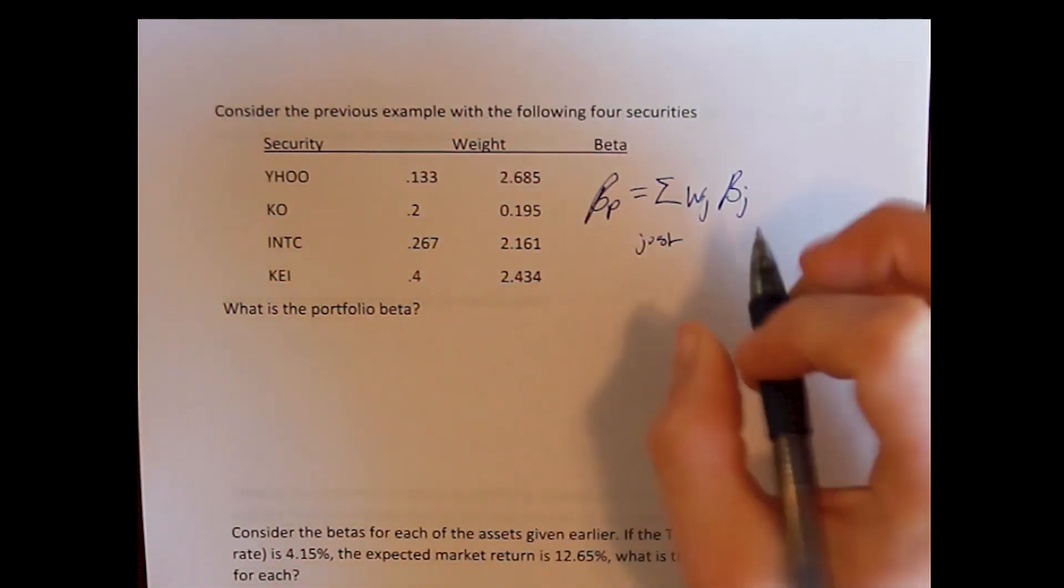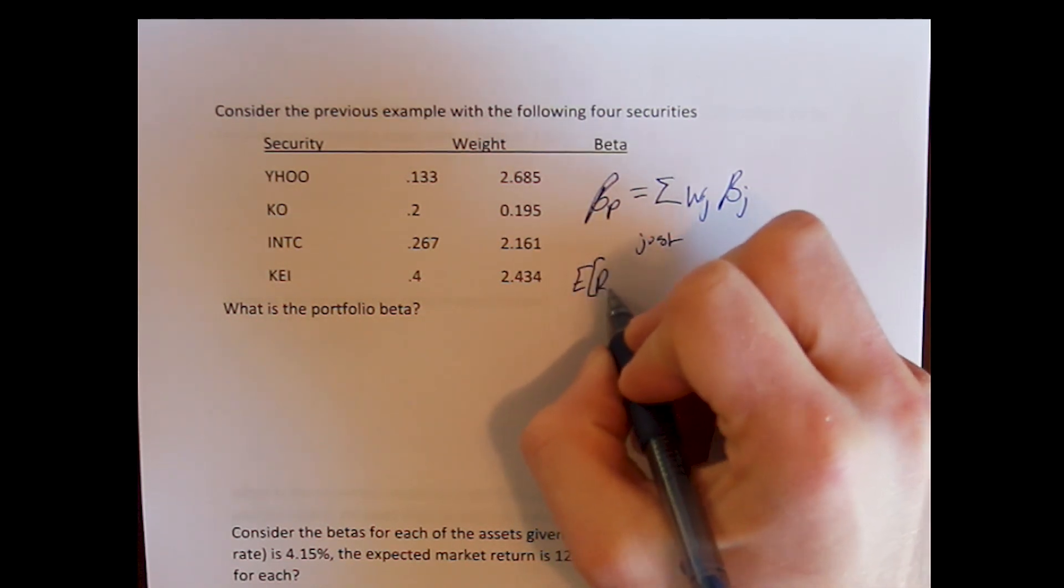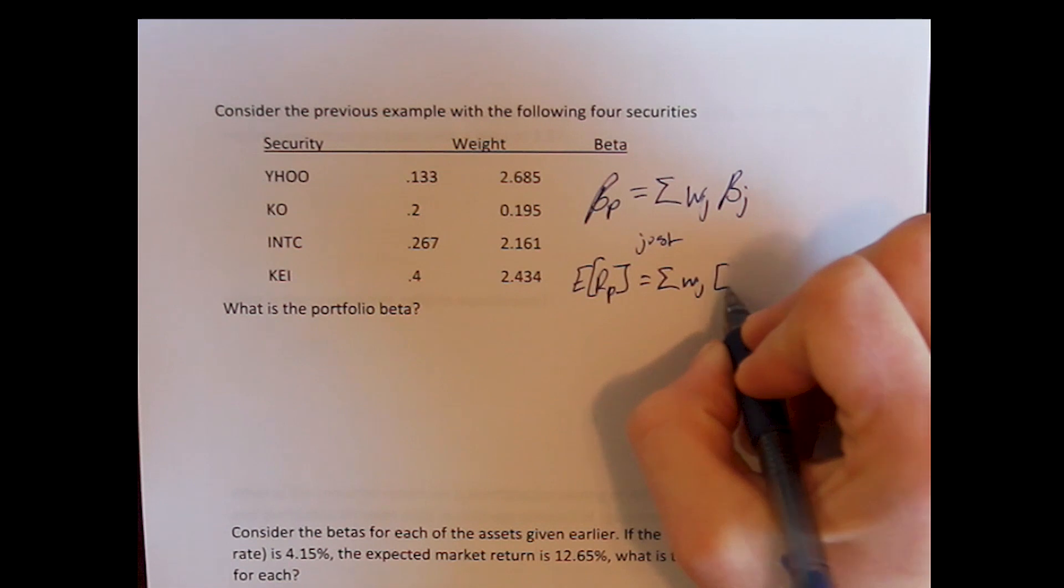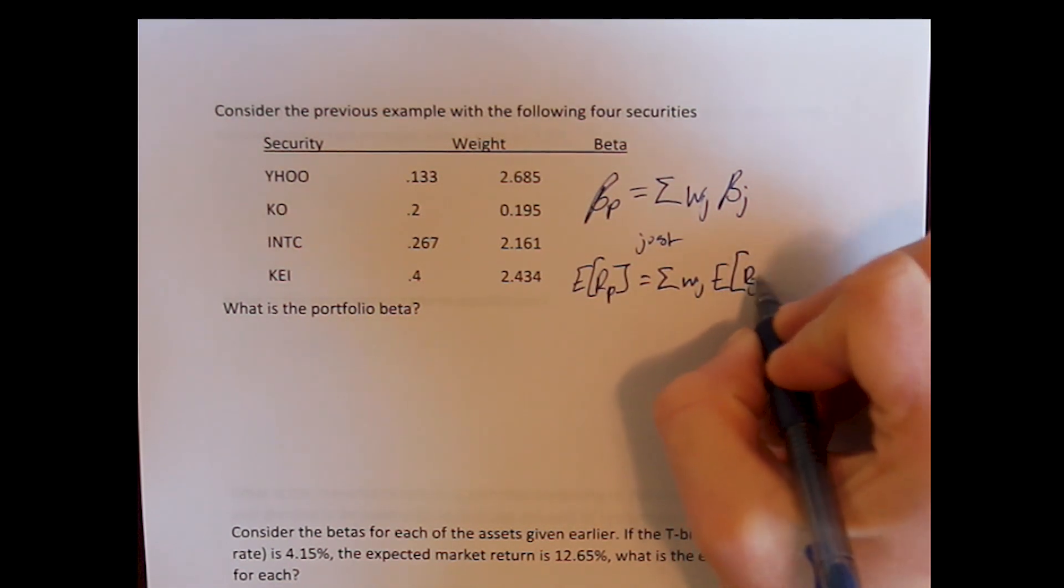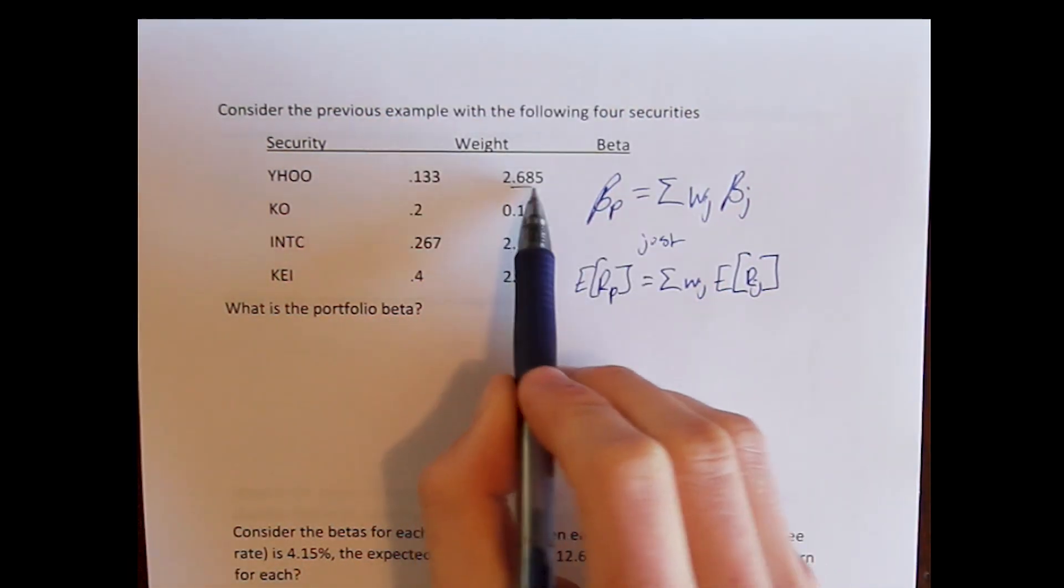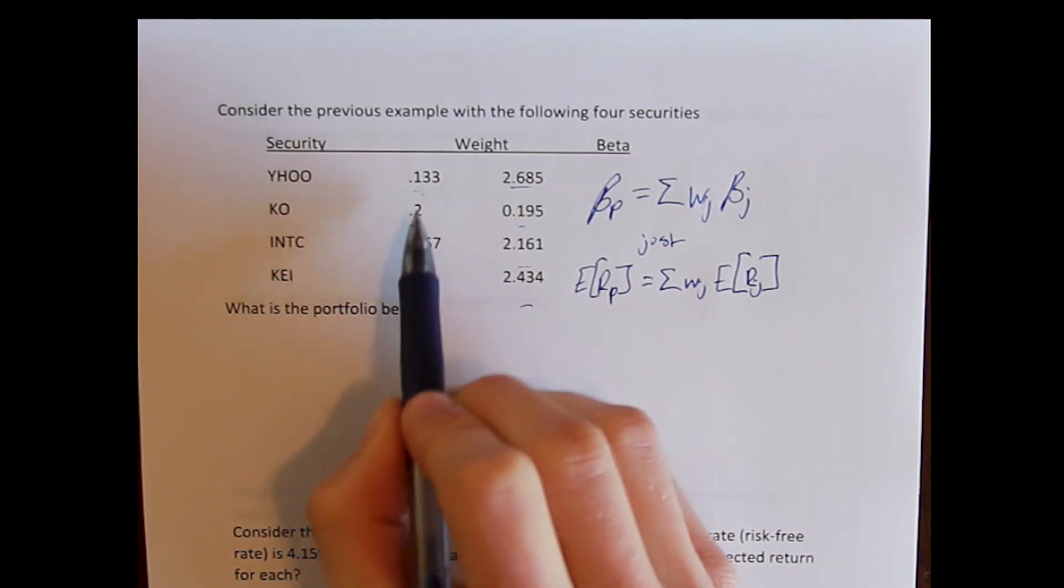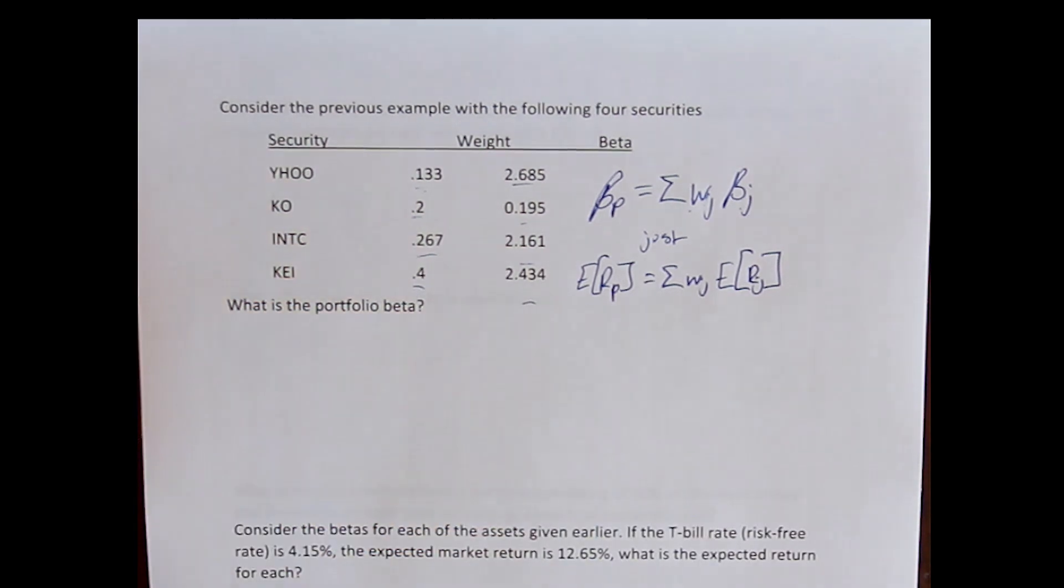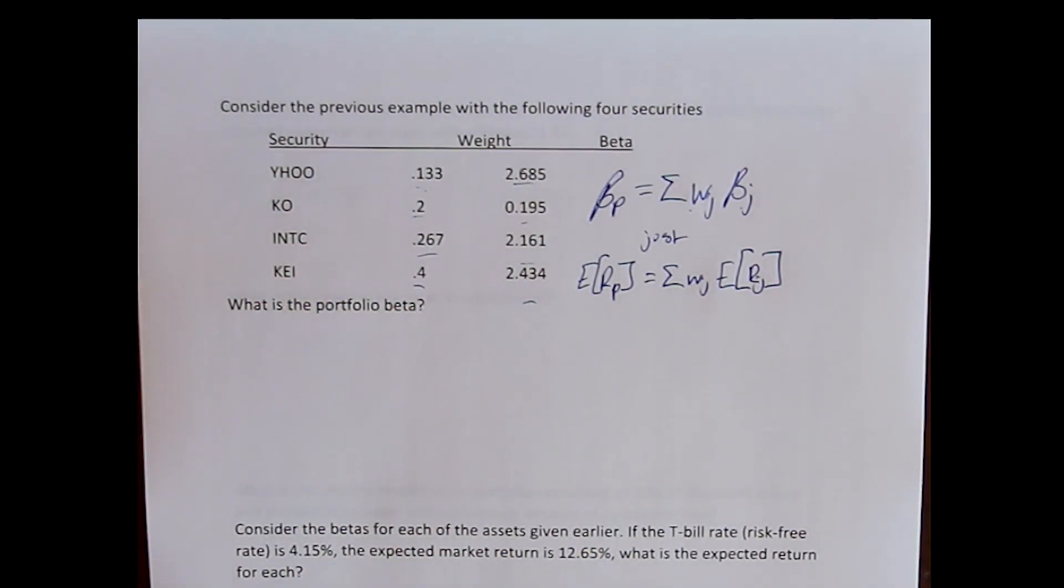Just like when we were talking about expected returns, we could calculate the expected return of the portfolio as the weighted average of the expected returns of the assets. Here we're given the betas for our four assets. We have the weights from our four assets, so we multiply the weights times the betas, and the beta of the portfolio is the weighted average of the portfolio betas.